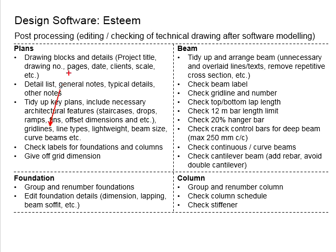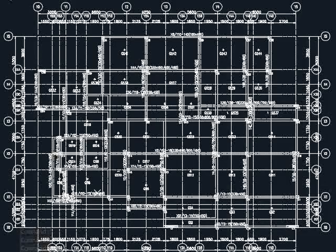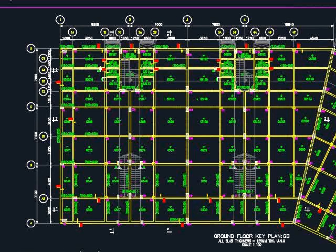You also need to tidy up grid lines, line types, line weights, and beam sizes. In the case of curved beams that you are unable to model, some modifications may be needed. Check the levels for foundations and columns, especially when classifying foundations and columns and limiting the number of sizes to be adopted throughout the project. Provide off-grid dimensions for members not on the grid to clearly indicate their exact locations.